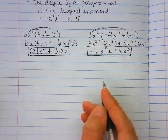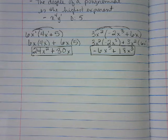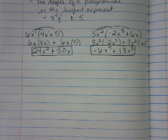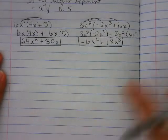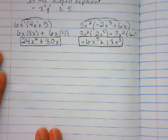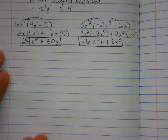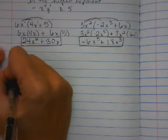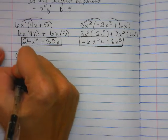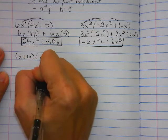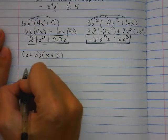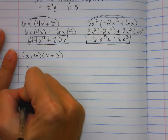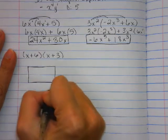Sometimes they get a little bit bigger. Sometimes we have a binomial times a binomial, and we can do that in a couple of different ways. I'm going to show you a couple of different ways with some different examples. The first example I'm going to give you is x plus 6 times x plus 3. Now in science you talked about Punnett squares, so one way you could do this is to create a Punnett square — a 2 by 2.